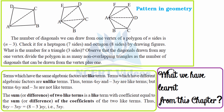The sum or difference of two like terms is always a like term, with a coefficient equal to the sum or difference of the coefficients of the two terms. For example, 8xy − 3xy: since they are like terms, we subtract the coefficients — 8 − 3 = 5 — giving 5xy. If it had been addition, 8 + 3 = 11 would give 11xy.